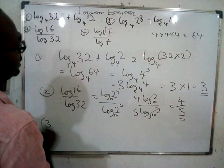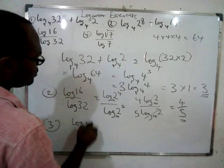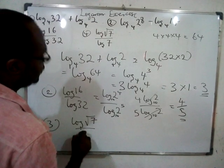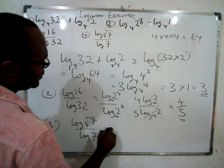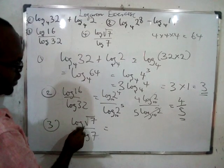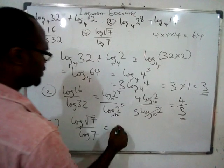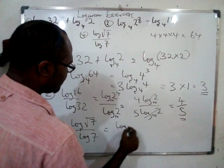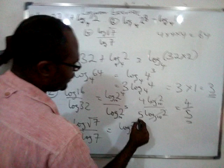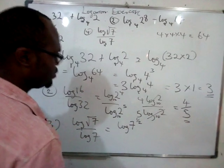For the last one, number three, we have log√7 over log7. If you are arguing base, it simply means that it is base 10.